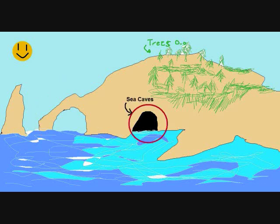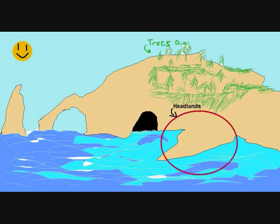Next is the sea caves. Sea caves form when waves cut large holes into fractured or weak rock along the base of sea cliffs. Sea caves are common in cliffs that are made of sedimentary rock.